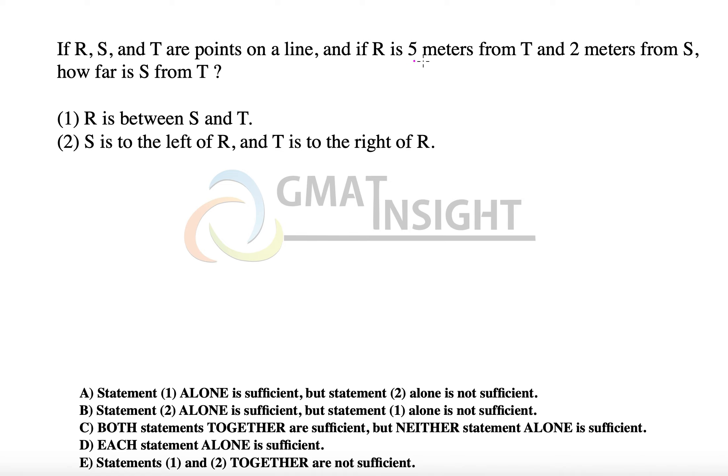If R, S and T are the points on a number line and if R is 5 meters from T and 2 meters from S, how far is S from T?